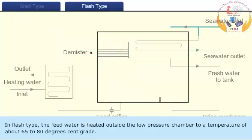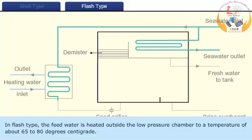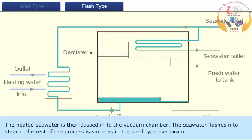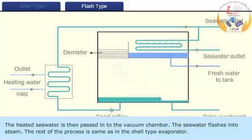In flash type, the feed water is heated outside the low pressure chamber to a temperature of about 65 to 80 degrees centigrade. The heated seawater is then passed into the vacuum chamber, where it flashes into steam. The rest of the process is the same as in the shell type evaporator.